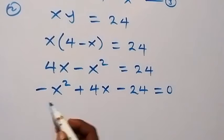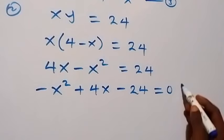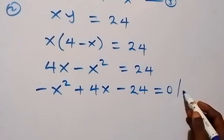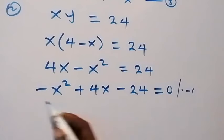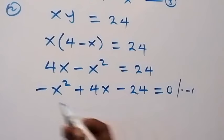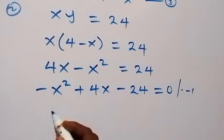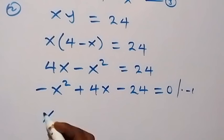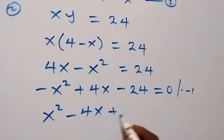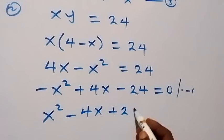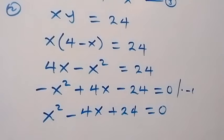From here, let's multiply through by minus 1 in order to remove the negative sign. So we have x squared minus 4x plus 24 equals to 0.